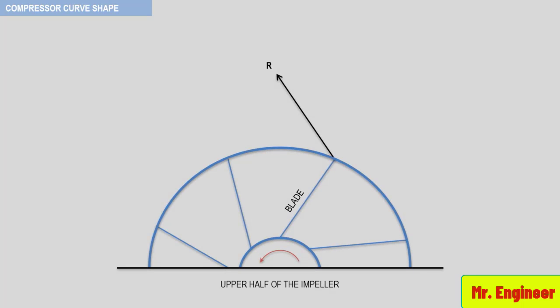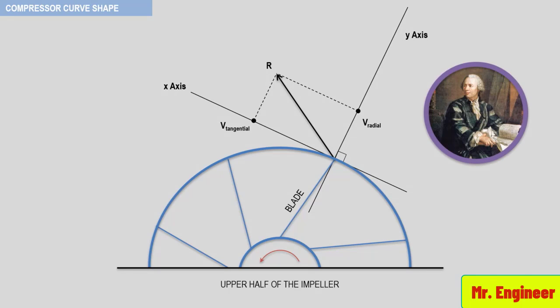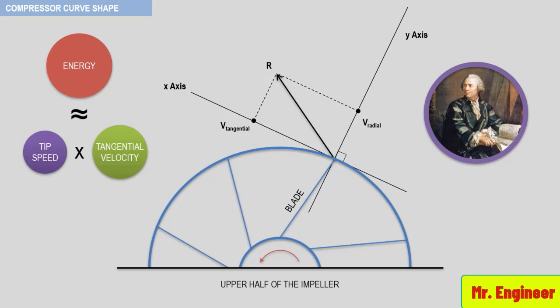If we now resolve the absolute velocity into X and Y components, the X-axis projection of the component is the tangential velocity of the gas at the impeller discharge. According to the energy equation of Euler, the energy created by any dynamic machine is proportional to the product of the tip speed and the tangential velocity.